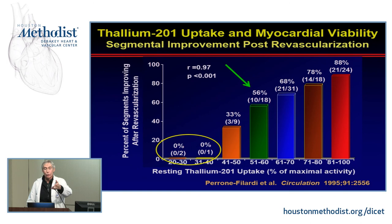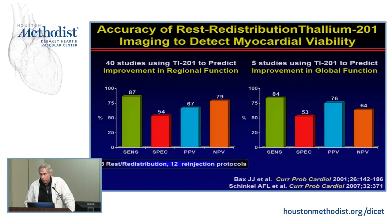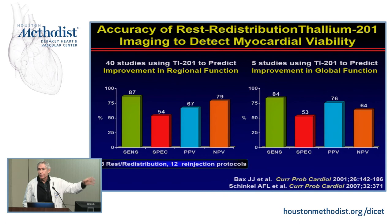Looking at all 40 studies using thallium to predict improvement in regional function, and five studies predicting global improvement, you see about 80 to 90% sensitivity but notably low specificity. This low specificity is one advantage of echocardiography — in identifying areas that clearly are not viable compared to what is viable. In summary, perfusion imaging is highly sensitive but not very specific.